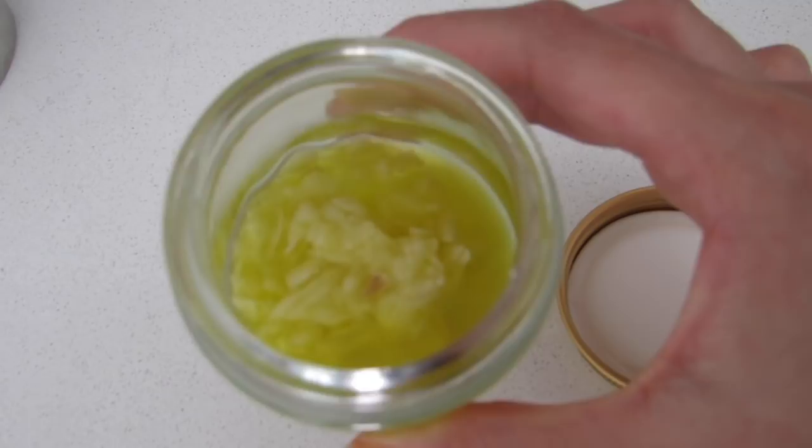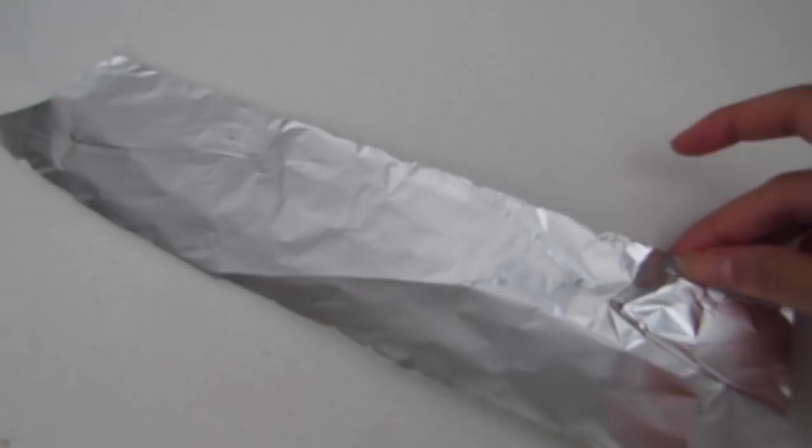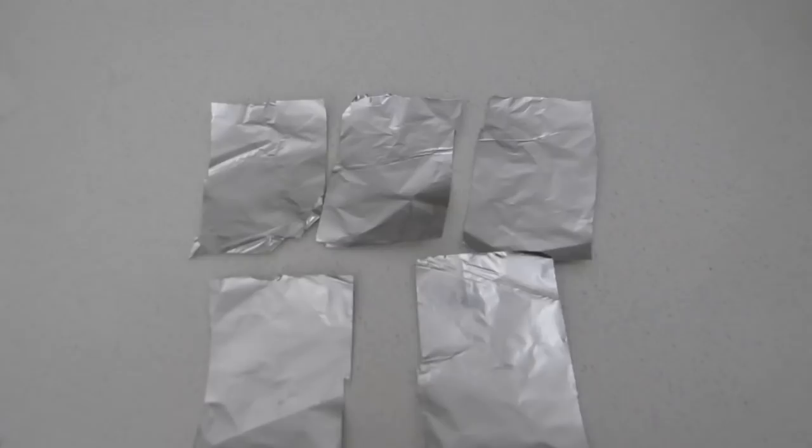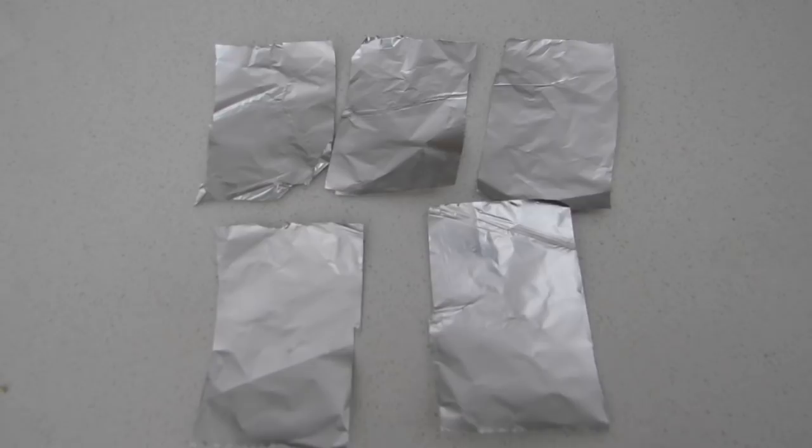Now let me show you guys how to apply. But before that, just take the aluminum paper and cut it into five small rectangular shape pieces and keep it aside.